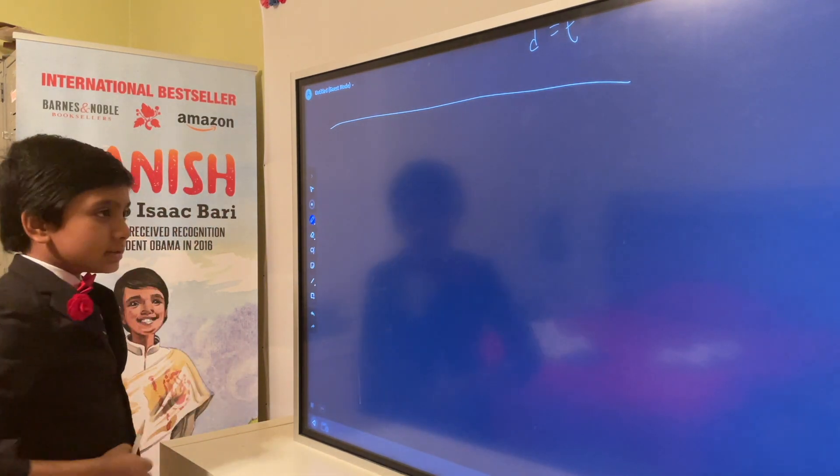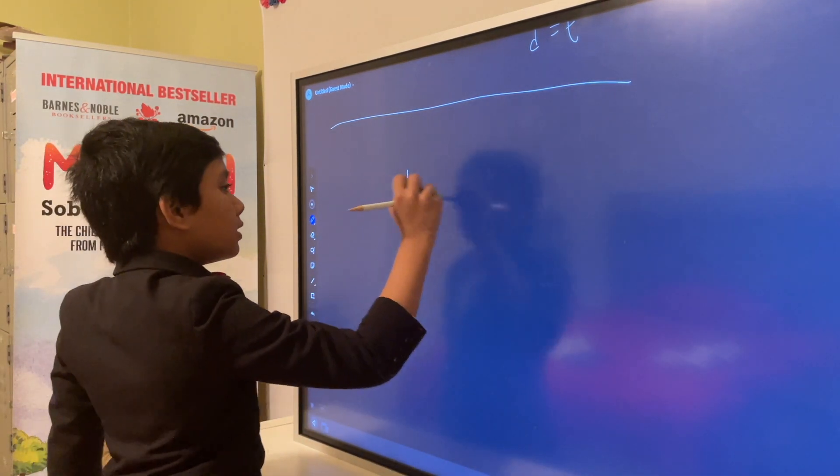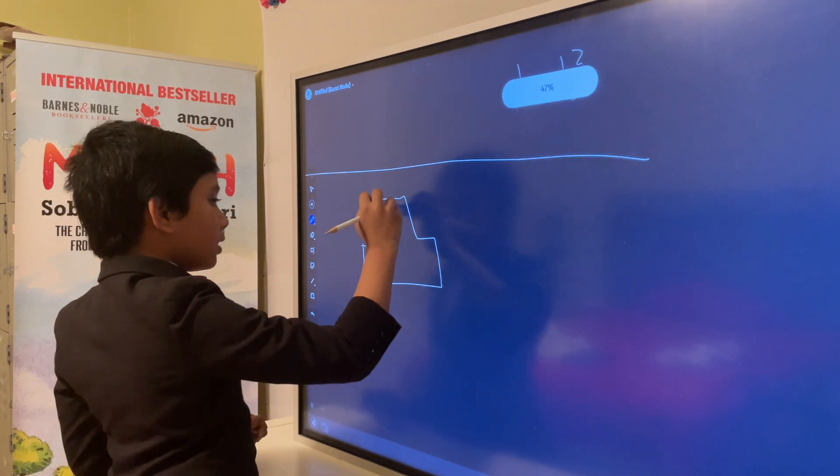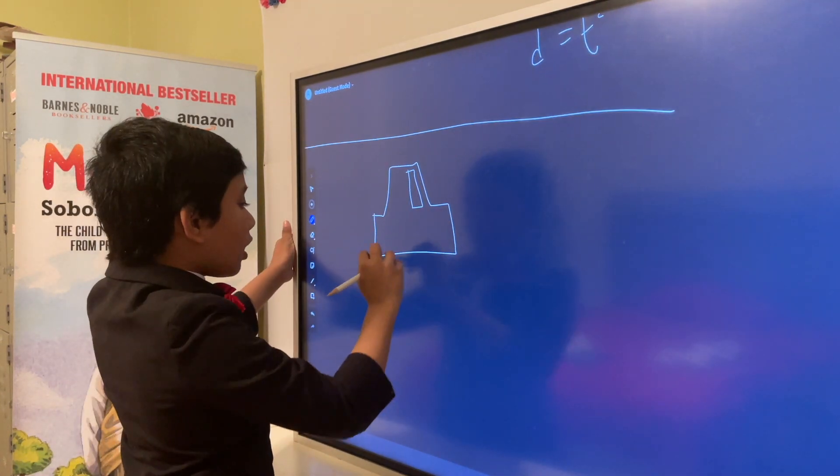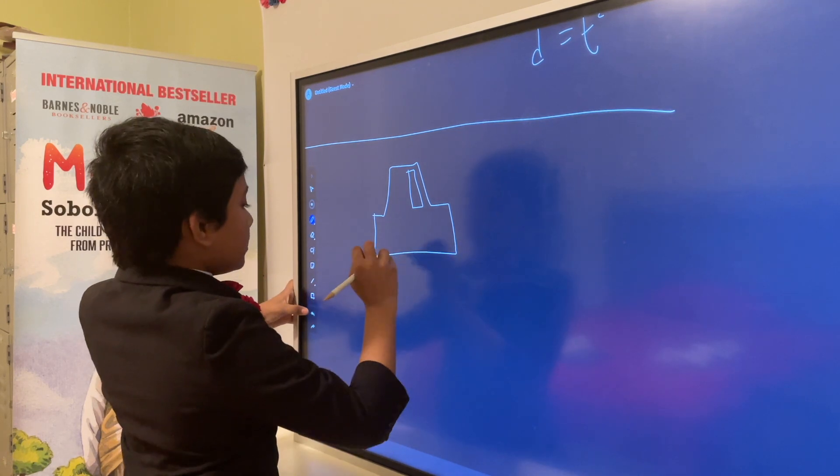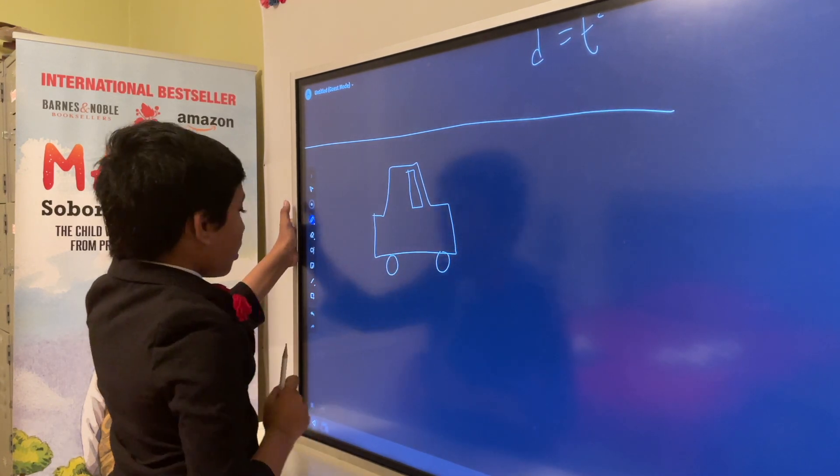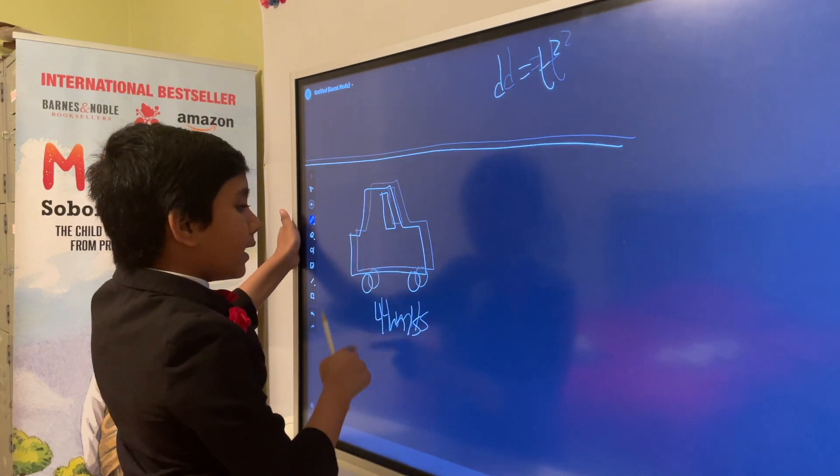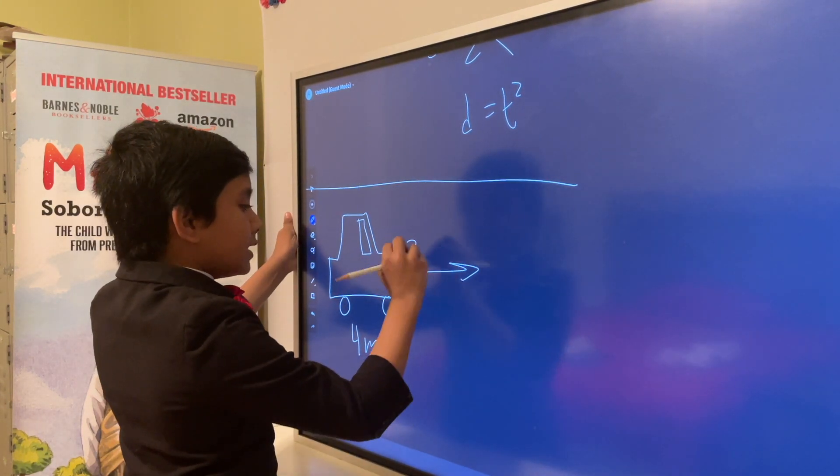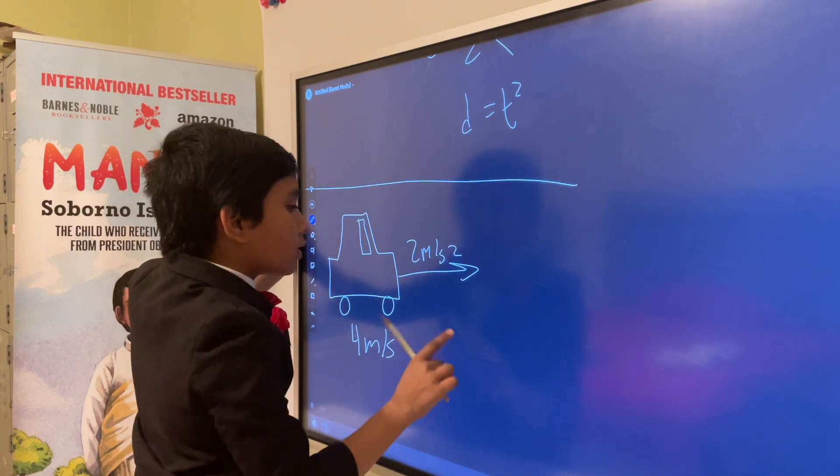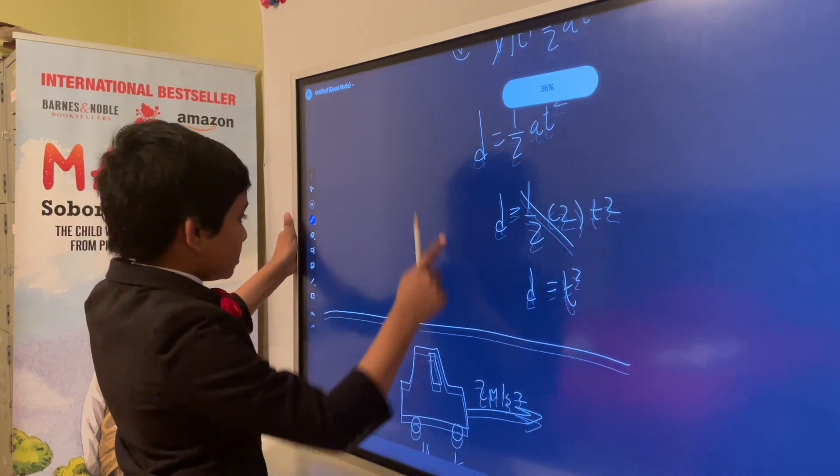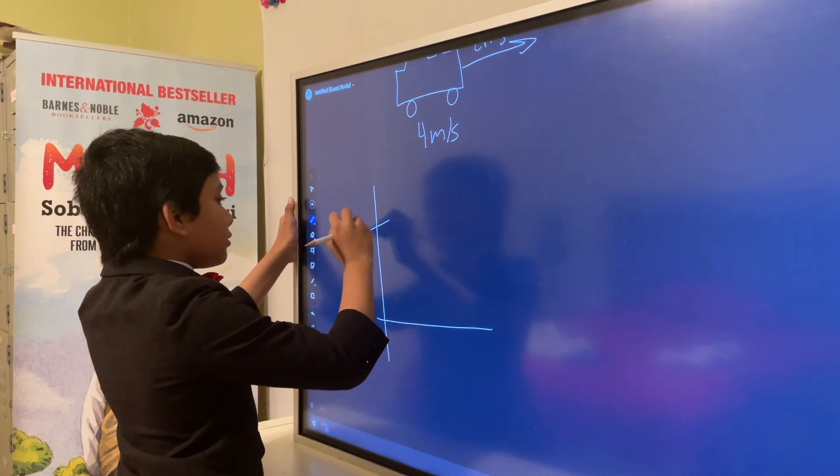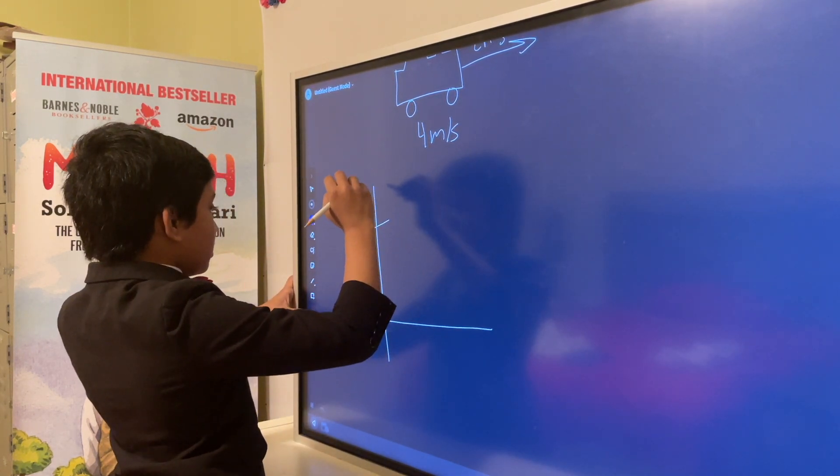Now our fourth and final scenario. Let's say that the car has already started at 4 meters per second and it accelerates at 2 meters per second squared. Now how can we express this? Well, also pretty simple.